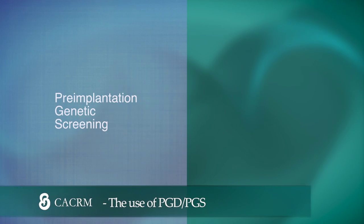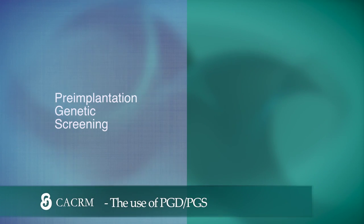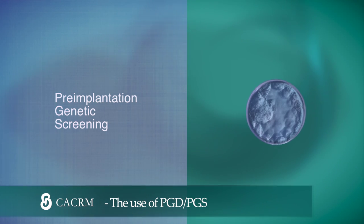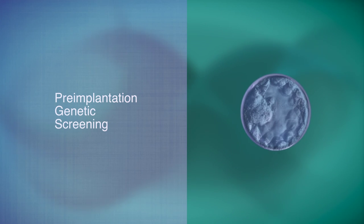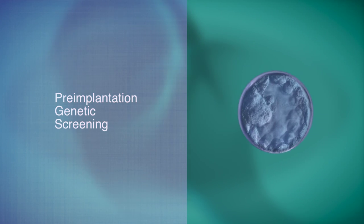PGS or pre-implantation genetic screening is genetic testing of the pre-implantation embryo that may determine if the embryo could potentially be affected by a chromosomal abnormality.